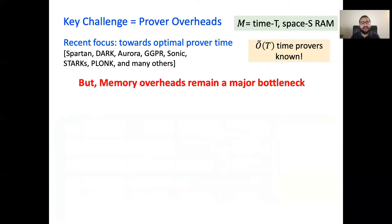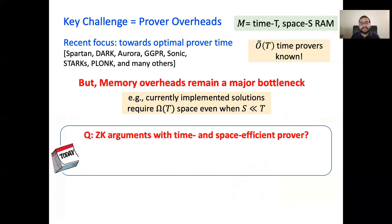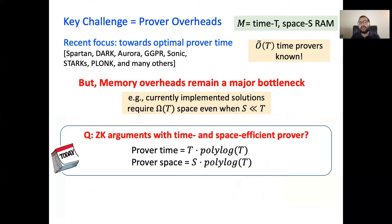Said another way, in currently implemented solutions, the prover ends up requiring space proportional to the running time of the underlying RAM program, rather than its space. As a step towards addressing this key challenge, in this work we focus on constructing zero-knowledge arguments where we want the prover running time and space to be as close to the running time and space of the underlying RAM program, where we allow polylogarithmic in t overheads.